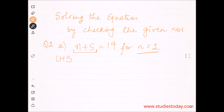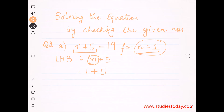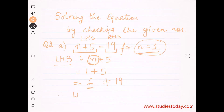LHS, that is the left hand side of the equation, which is n plus 5. Ab hum n equal to 1 ke liye kya karenge — jahan pe n dikh raha hai, n ko hata denge aur n ki jagah 1 laga denge. Toh yeh ho gaya 1 plus 5, jo 6 hota hai. LHS for n equal to 1 is 6.